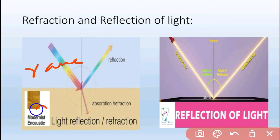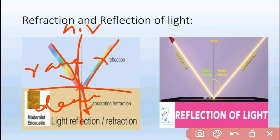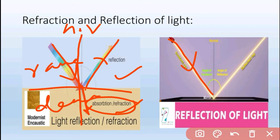When incident light hits a denser medium interface, we get reflected light and refracted light. The normal is perpendicular to the medium interface. The angle of incidence and the angle of reflection are defined with respect to this normal, and these form the basis of reflection behavior of light.